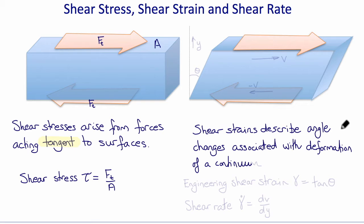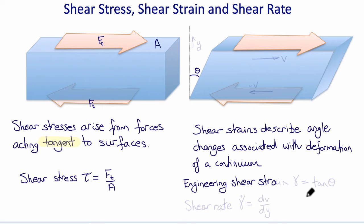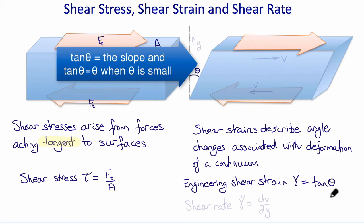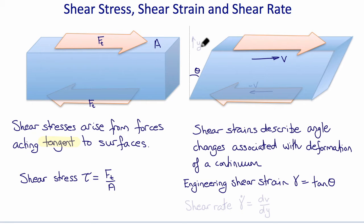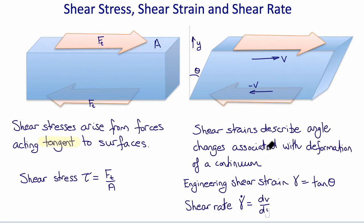Shear strains describe the angle changes associated with deformation of a continuum. For example, if the angle change produced by the shear stress in this example was θ, then the so-called engineering shear strain γ would be the tan of the angle θ, or θ for small angles. If instead of thinking of this as a deforming solid we think of it as a flowing fluid, with velocity v on top and minus v on bottom, and a gradient of velocity with respect to the y-axis, then the shear rate would be dv/dy — it's the rate of shear strain.